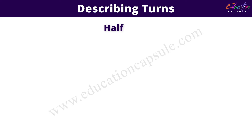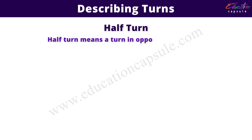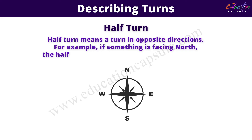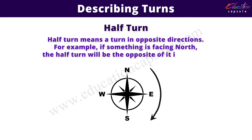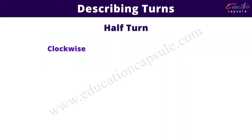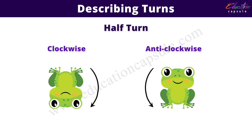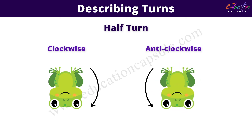Next is half turn. Half turn means a turn in the opposite direction. For example, if something is facing north, the half turn will be the opposite of it, that is south. We can take half turn clockwise and anticlockwise. As you can see here, if this is the starting position of the frog, after taking half turn in clockwise or anticlockwise direction, we will get the frog in these positions.